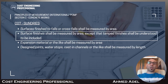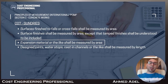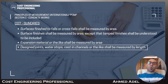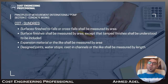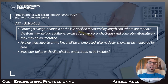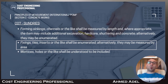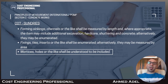Subsection C7 is sundries. Surfaces finished to falls or cross-falls shall be measured by area. Surface finishes shall be measured by area, except that tamped finishes shall be understood to be included. Expansion materials shall be measured by area. Design joints, water stops, and cast-in channels shall be measured by length. Forming sinkings and channels shall be measured by length, and where appropriate the item may include additional excavation, hardcore, shuttering, and concrete, or they may be enumerated. Fixings, ties, and inserts shall be enumerated or may be measured by area. Mortice holes shall be understood to be included.